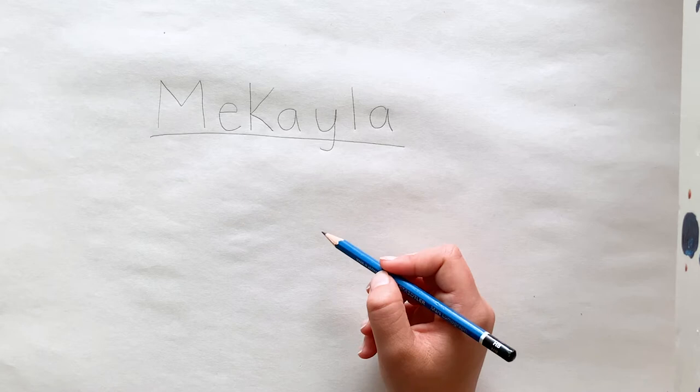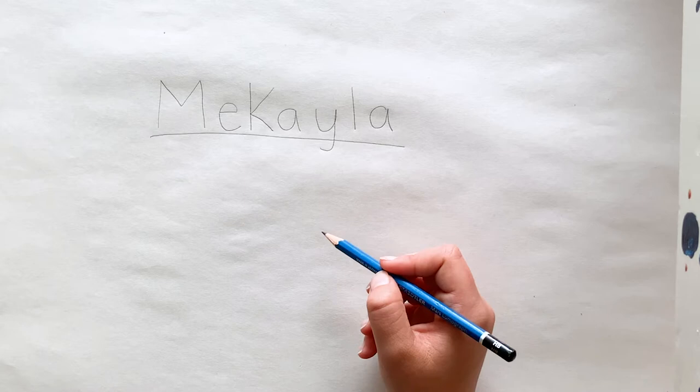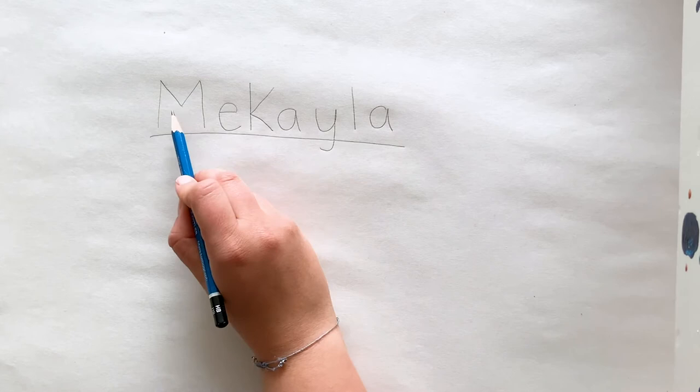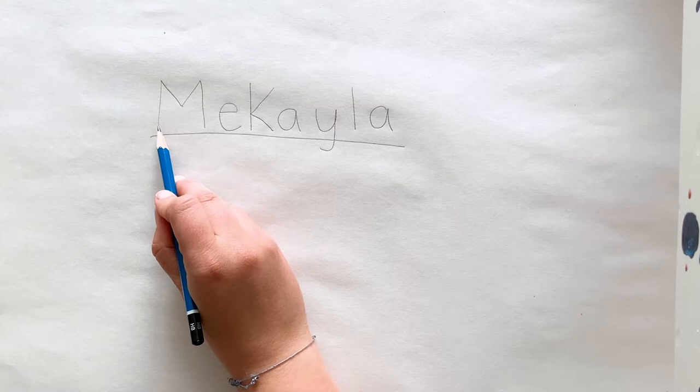For our warm-up today, we're going to be drawing a drawing for each letter of our name, and the thing you draw has to start with the letter that you're working with. The first letter of my name is an M, so I'm going to draw something that starts with the letter M.